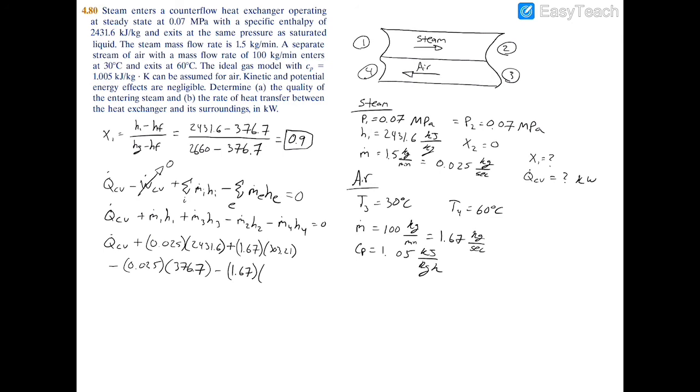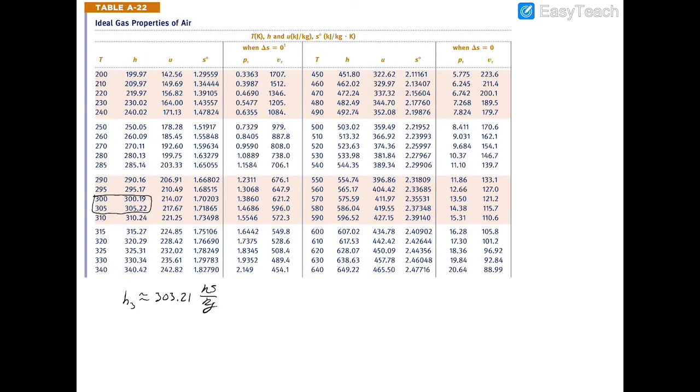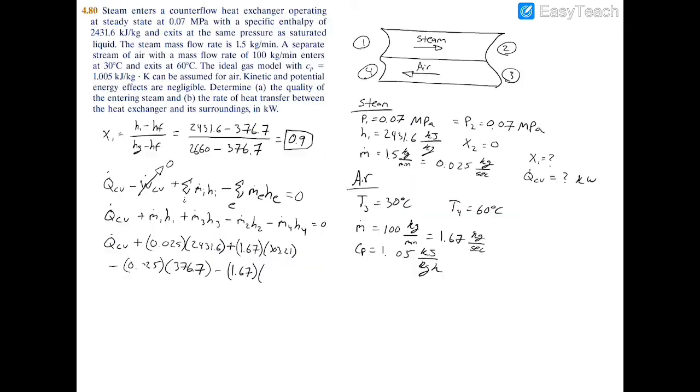Or 333 kelvin. So we can go back to table A22 and we can interpolate between 330 and 340, and we can see that h4 is just about 333.36 kilojoules per kilogram.